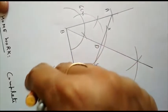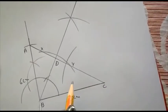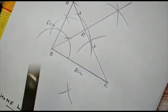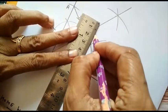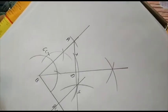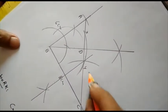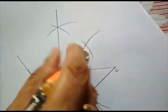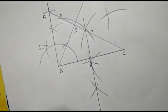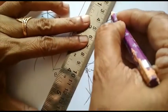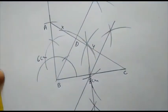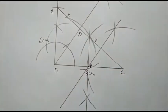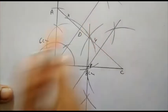So first of all I am drawing the perpendicular bisector of BC. And then I will draw the perpendicular bisector of CD. These are the perpendicular bisectors of BC and CD. Where they intersect, let them intersect at point P.